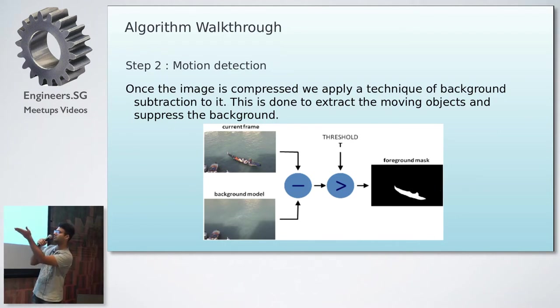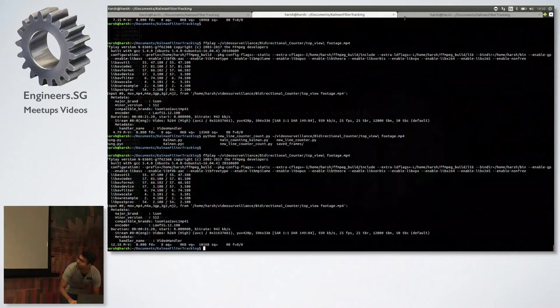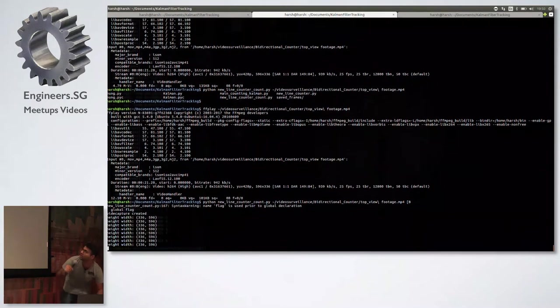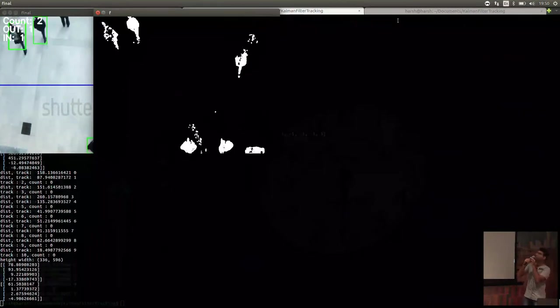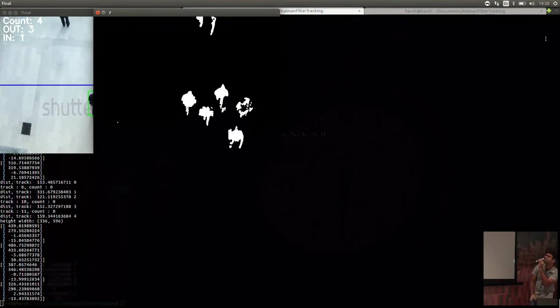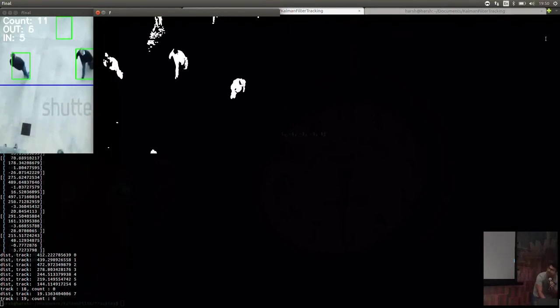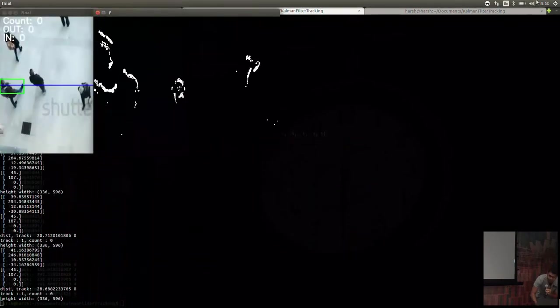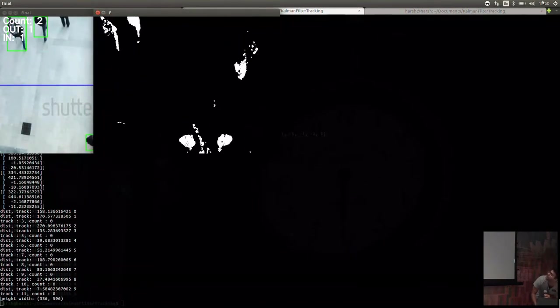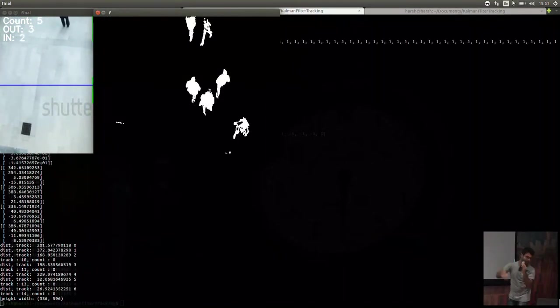How do we detect moving objects? There are two frames: the background model and the current frame. When you subtract it, the background gets subtracted totally and only the moving objects appear. You threshold it to get a black and white image - in computer vision this is called a blob. As you can see, we have blocks extracted by pixel differentiation and background subtraction.